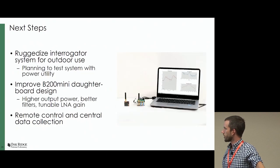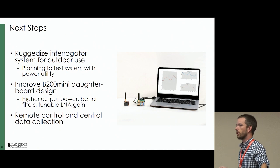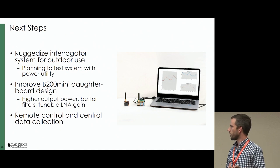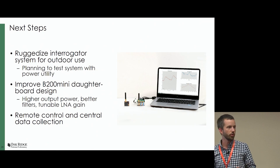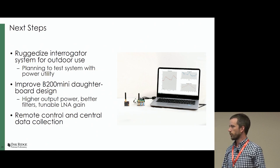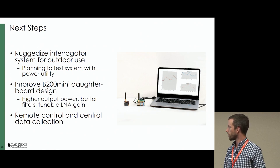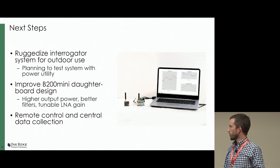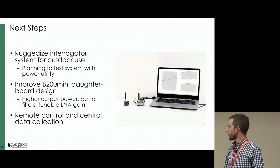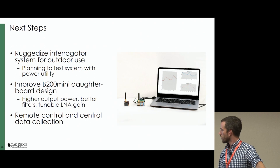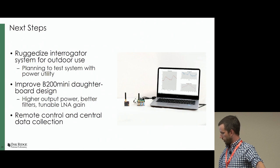Next steps: ruggedize the interrogator system for outdoor use. We're planning to deploy, within the next year, the system at a power utility to do remote temperature measurements, see what systems need to be in place, and then hopefully integrate the chemical sensors into the transformers. Improve the daughterboard design — more output power, get more range, better measurements. And then remote control and central data collection so that we can see what's going on without having to physically be at that location.